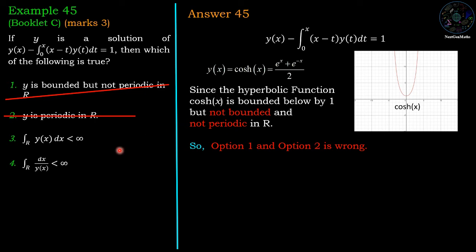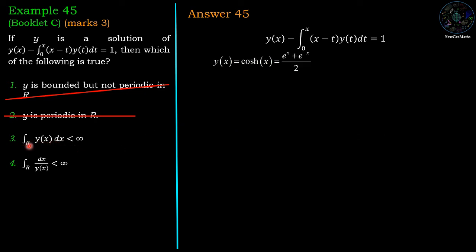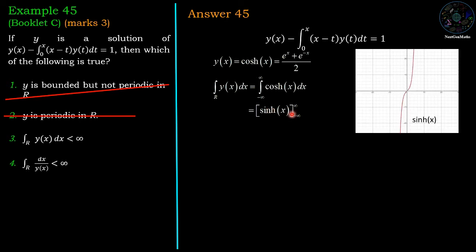For the third option, we evaluate integration of y(x) dx over R, which is integration from minus infinity to infinity of cosh(x) dx. The integral of cosh(x) is sinh(x), and sinh(x) is an unbounded function — sinh(x) goes to infinity. So the third option, which claims this integral has a finite value, is wrong.